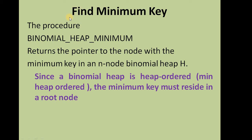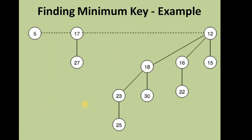The next operation on the binomial heap is finding the minimum key. We use a procedure called binomial_heap_minimum, which returns a pointer to the node with the minimum key in an n-node binomial heap. Since the binomial heap is min-heap ordered, the minimum key must reside in a root node. So we identify the root list — you can see in each binomial tree the minimum key is at the top — and we find the minimum from those root nodes only.